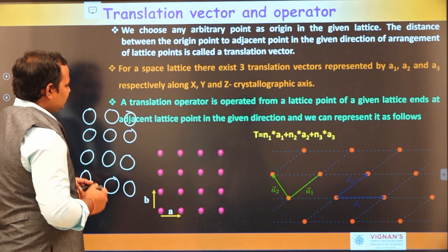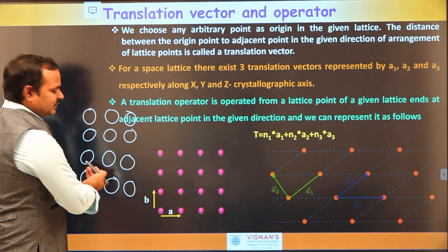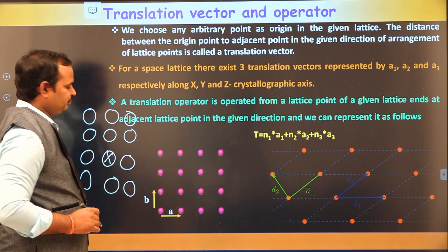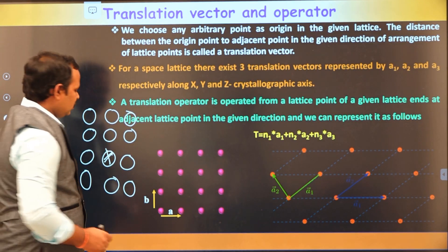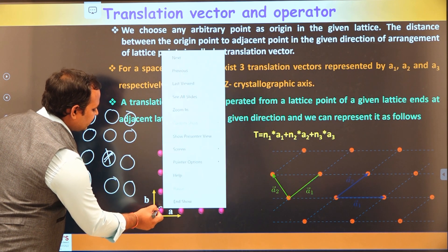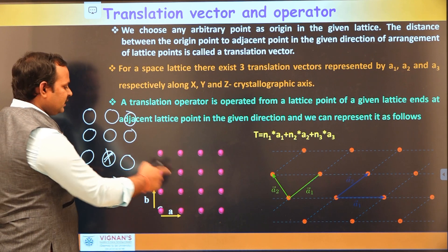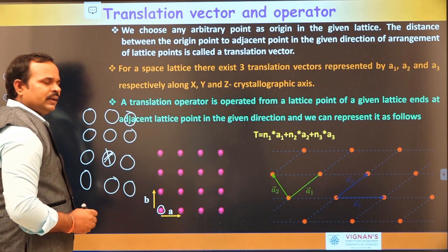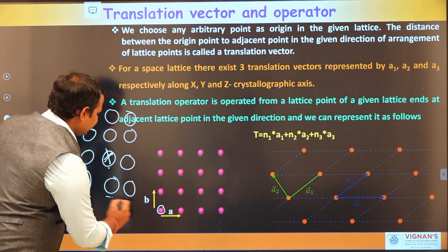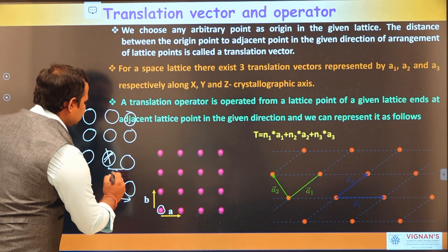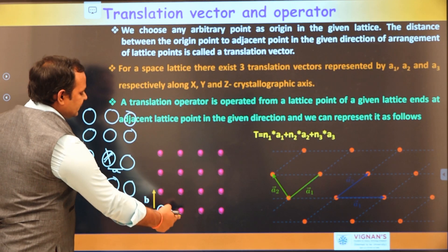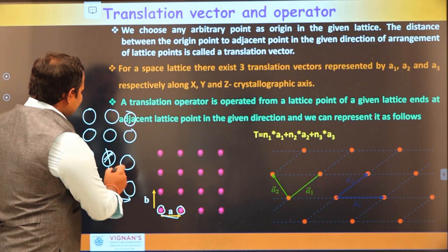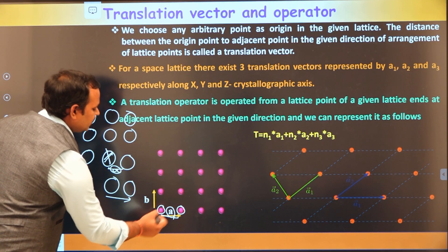Let's start to visualize this. In the real crystal, let's select an atom arbitrarily and place a corresponding point in space. Now, in a given direction, we find the distance A between two successive atoms. We then place another point in space at a distance A from the origin — this is the translational vector in space.